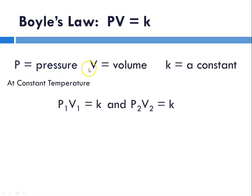Where P is pressure, V is volume, and k is a constant at constant temperature. P1 times V1 equals a constant and P2 times V2 again is equal to a constant. Here we're talking about a fixed sample of a gas - you're not adding in any new particles.